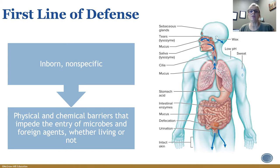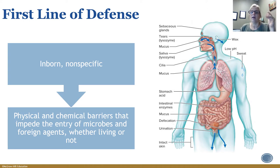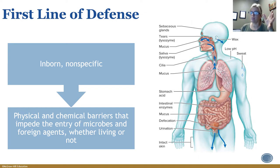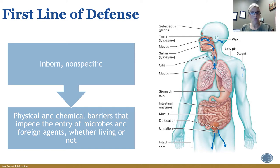Some of these barriers are shown in a figure. We have sebaceous glands that produce earwax, which physically blocks entry. Some things fall into two categories — for instance, earwax, sweat, and tears also have chemicals in them. Other examples include mucous membranes, saliva, cilia, pH (very low or very high), sweat, stomach acid, and intestinal enzymes.